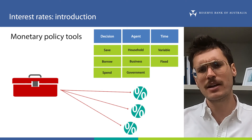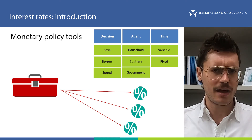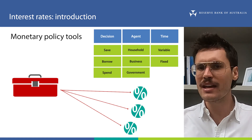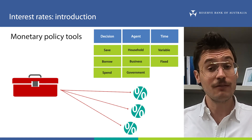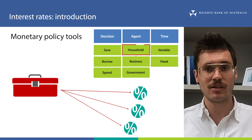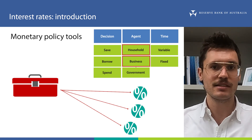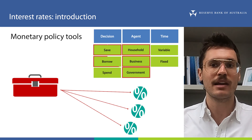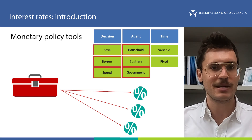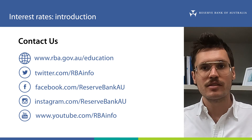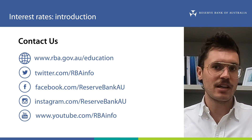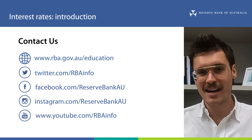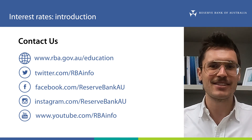Although different monetary policy tools work in different ways, remember that as we look at each of them in the coming videos, they all share the same key objective: to influence the different interest rates that households, businesses and governments face when they make decisions about saving, borrowing and spending in the Australian economy. So that's all for this video. Next in this series we'll look at conventional monetary policy tools, so the target for the cash rate. See you next time.